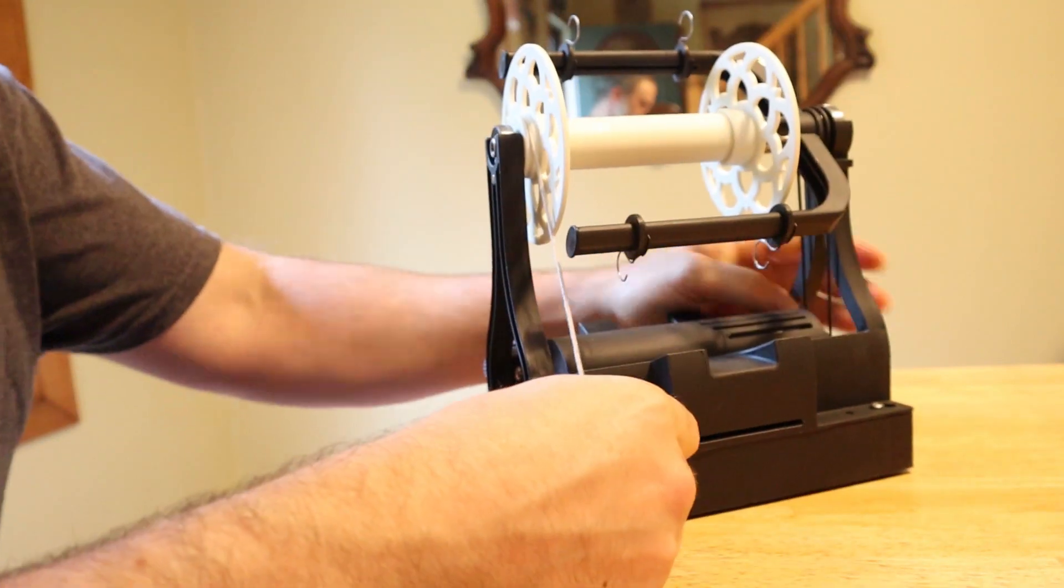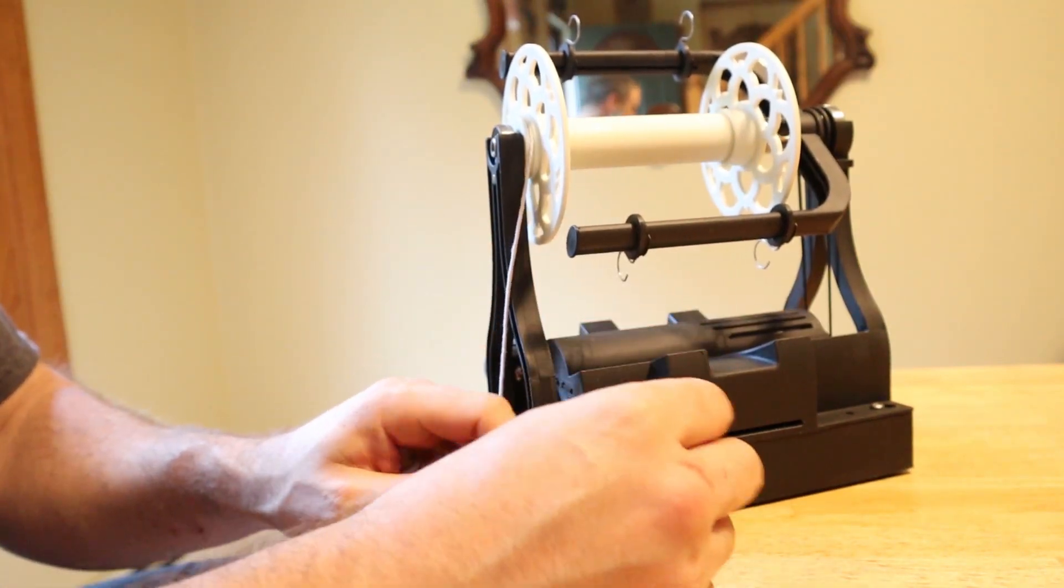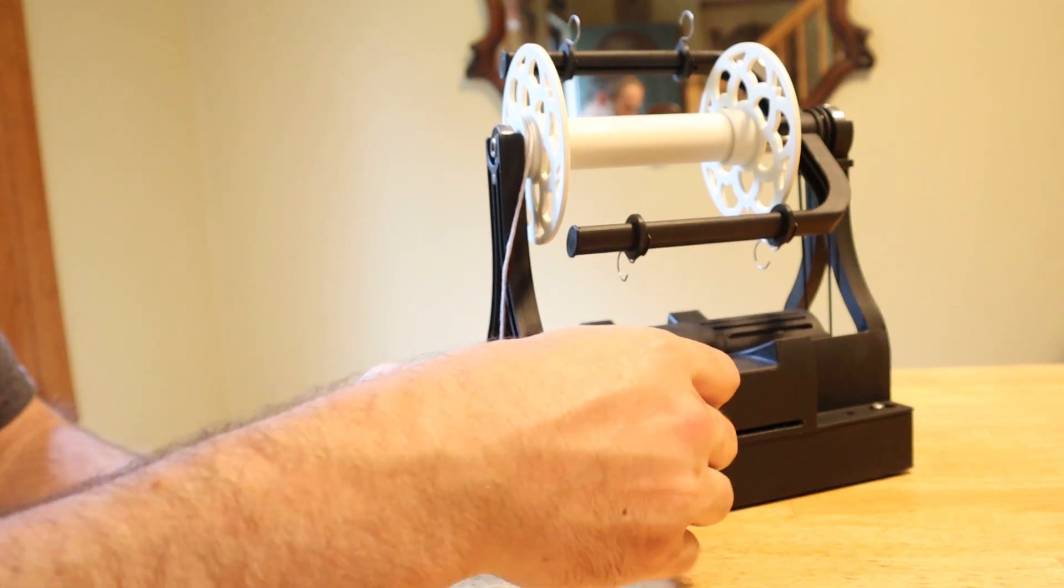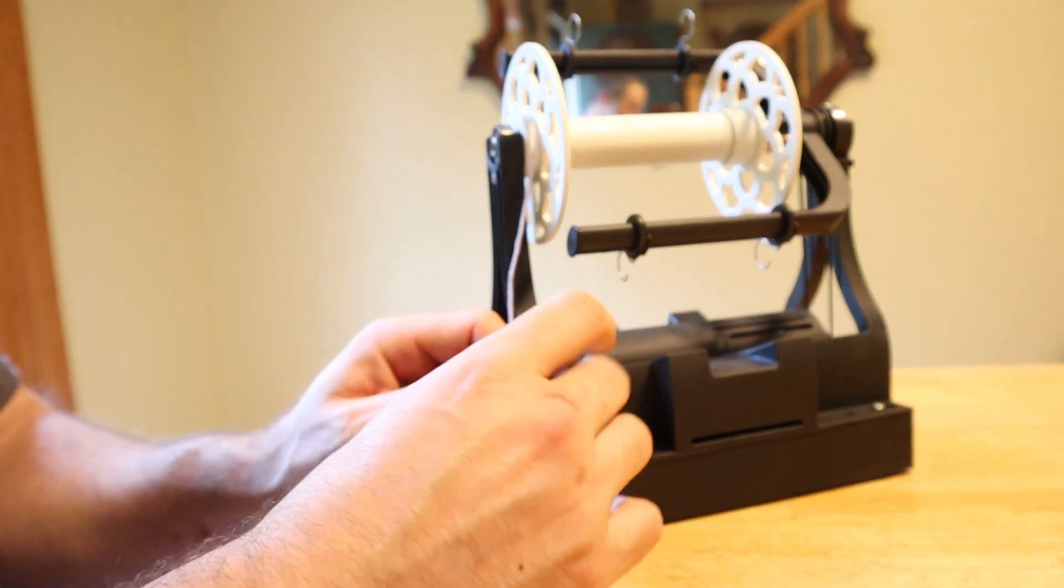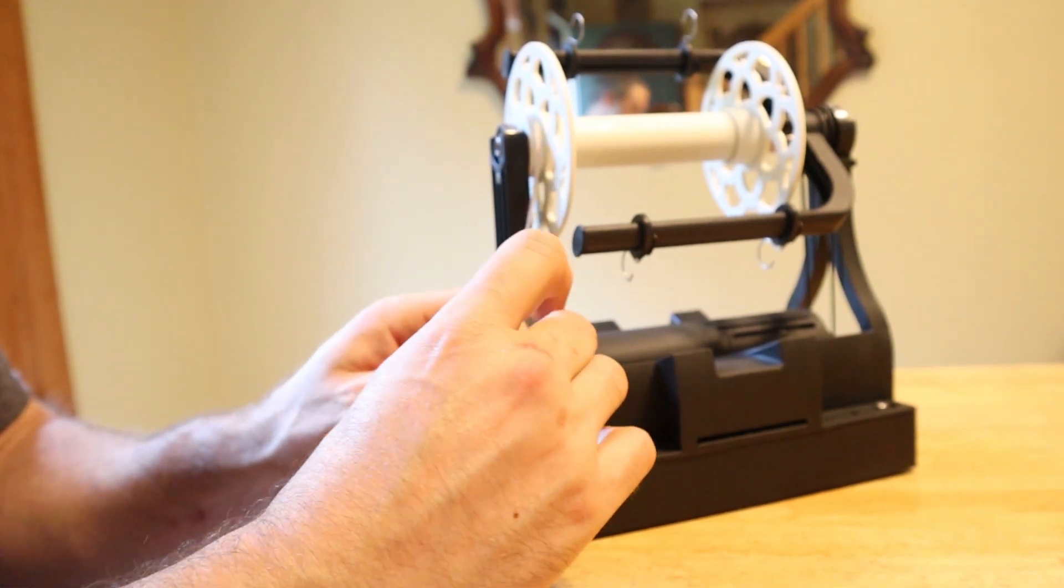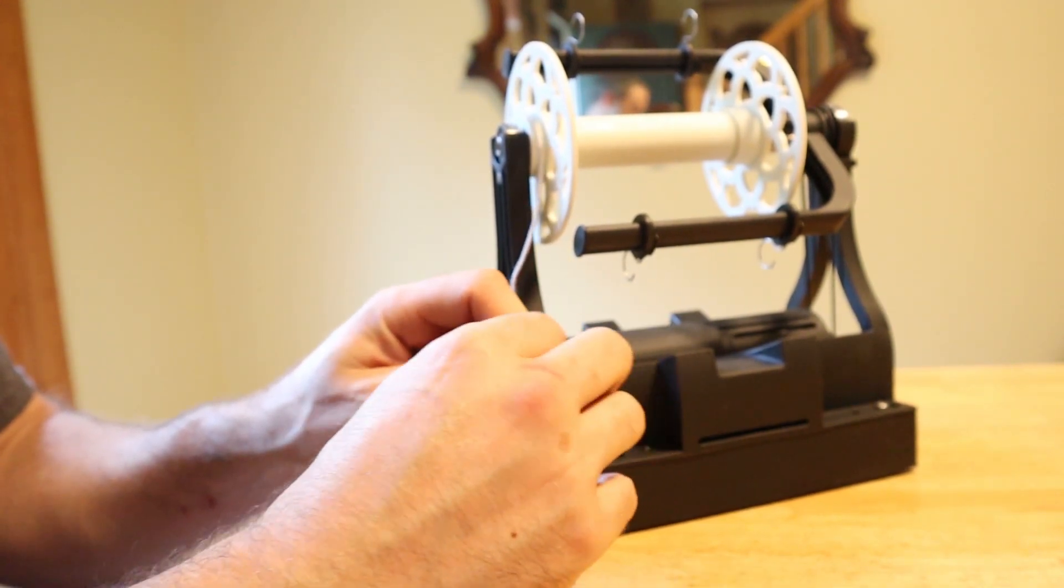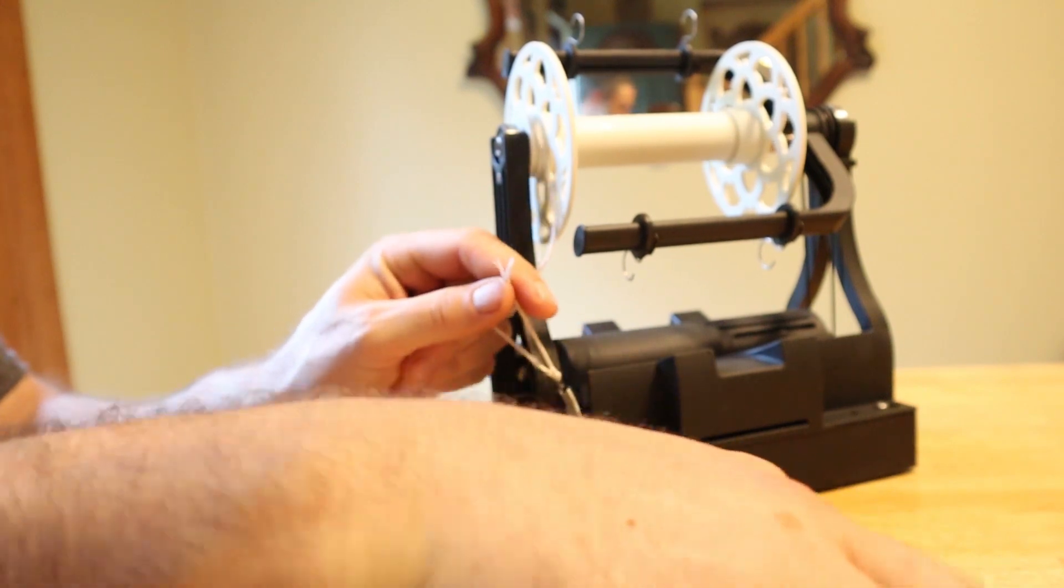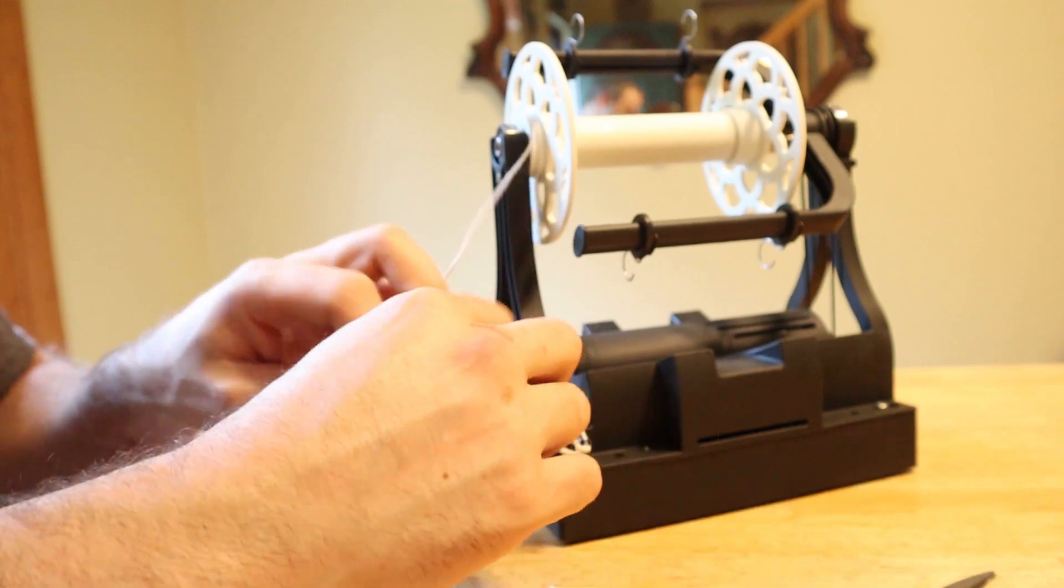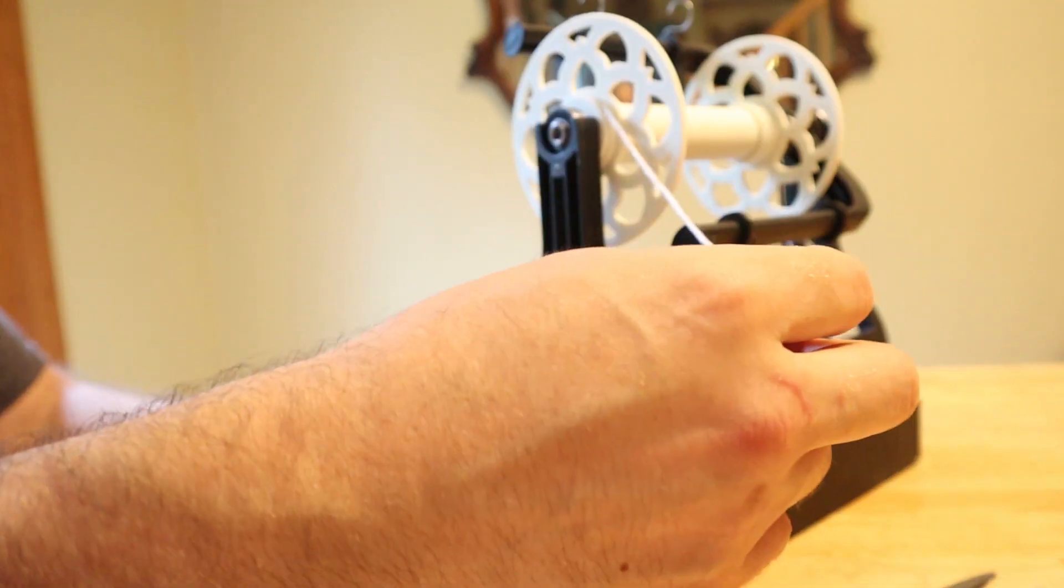Go through the hole of the spring and again just pretty much any simple knot will work on this end. And then I'm cutting off the long tail again and that's pretty much all there is to it.